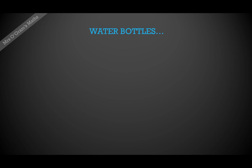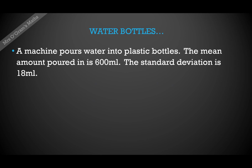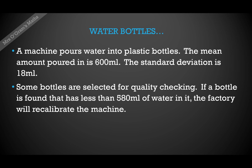Here's the example we're going to take a look at. It's about water bottles. A machine pours water into plastic bottles. The mean amount poured in is 600 millilitres and the standard deviation is 18 millilitres — this could be for something like a pump bottle where you have a factory producing them. Some of the bottles are selected for quality checking, and if a bottle is found to have less than 580 millilitres of water in it, the factory will decide they need to recalibrate the machine to make sure it's putting in the right amounts of water.